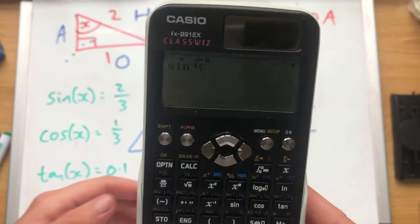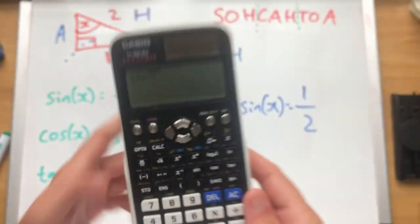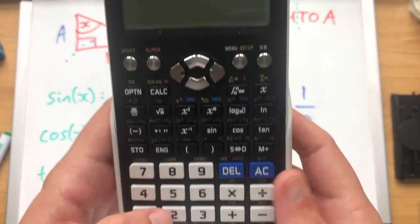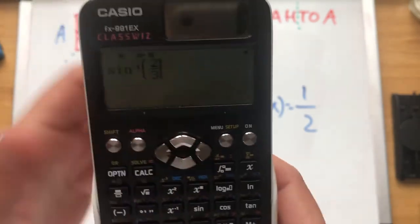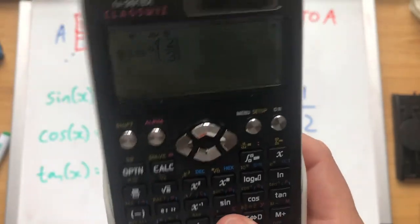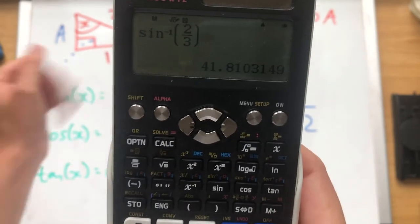Sine x equals 2 thirds. So we're going to do sine to the minus 1, sine x equals 2 thirds, sine to the minus 1, 2 thirds. Whatever sine x equals, do sine to the minus 1 of that. So there we go, that's what sine is.